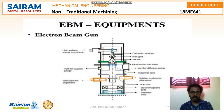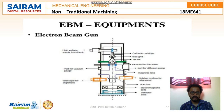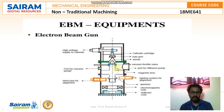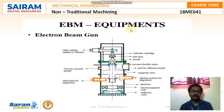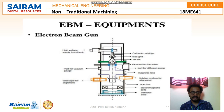The electron beam stream is shaped into a circular cross-section by passing it through the magnetic lens. Additionally, by passing the beam through the aperture and electromagnetic coils, the velocity of the electrons can be increased to approximately two-thirds — that is, 60 to 70 percent — of the speed of light. The beam with circular cross-section then passes through the lighting system for alignment, all of which is also kept inside a vacuum chamber.